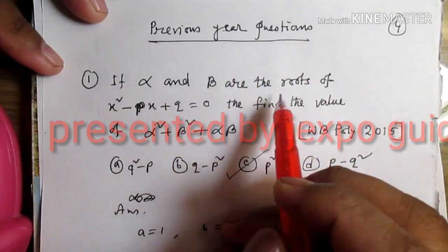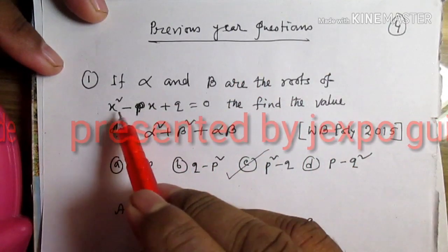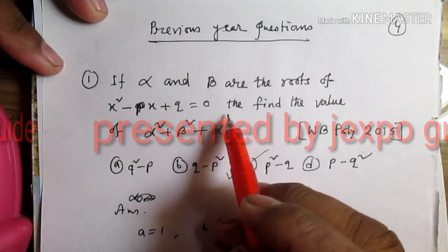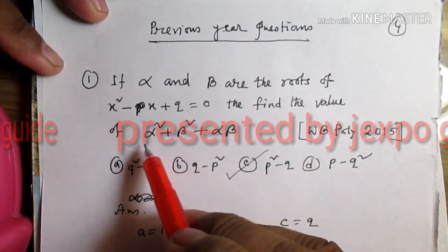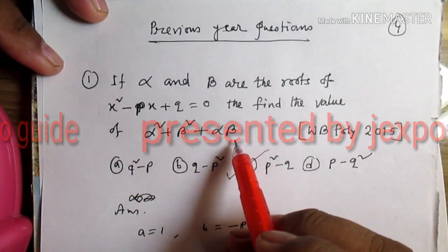If alpha and beta are the roots of the equation x squared minus px plus q equal to 0, then find the value of alpha squared plus beta squared plus alpha beta.